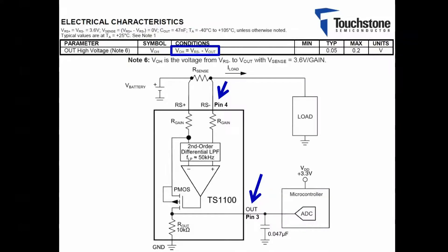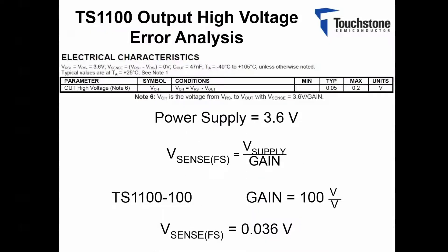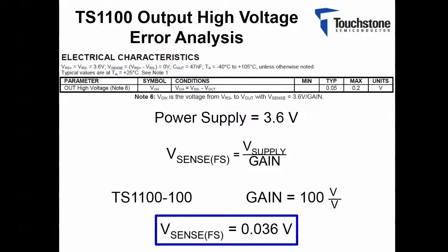Now let's begin the demonstration. First, I will start by calculating the full-scale voltage across the R-Sense resistor. The equation for the full-scale V-Sense is defined in note 6 below the EC table. By substituting the values into the given equation, I have solved for the full-scale V-Sense.